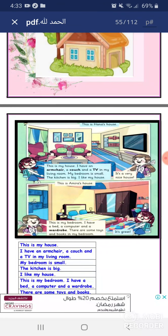This is my house. I have an armchair, a couch, and a TV in my living room. My bedroom is small. The kitchen is big. I like my house. It's a very nice house.